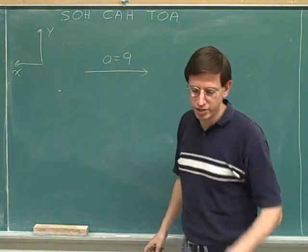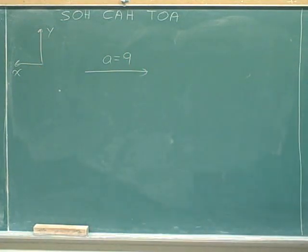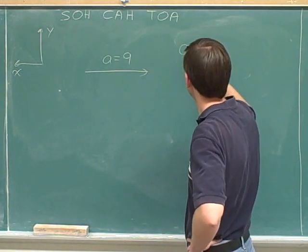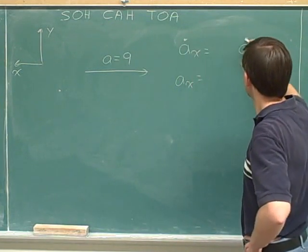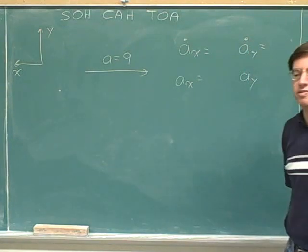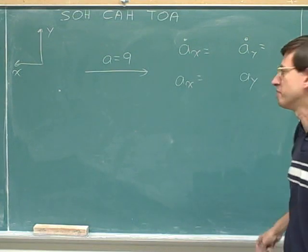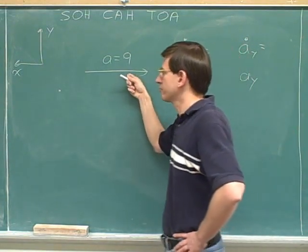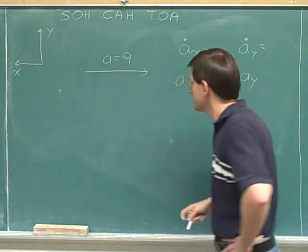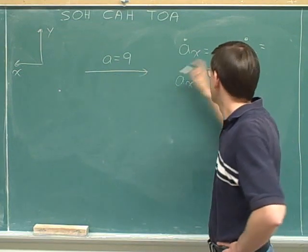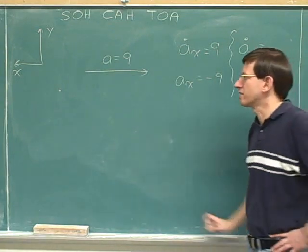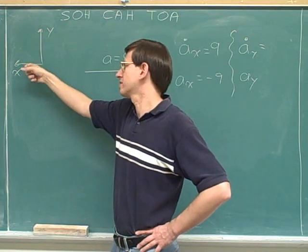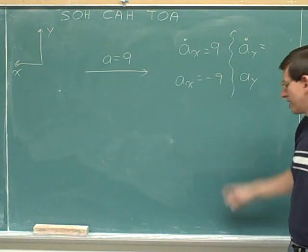Let's break this vector into components using these positive directions. This vector is purely horizontal — purely parallel or anti-parallel to the x-axis. So the entire vector represents the x-component, and the magnitude of the x-component is 9. But that's negative 9 once we consider the sign, because the vector is pointing to the right while the positive direction is to the left. So this should be negative 9.